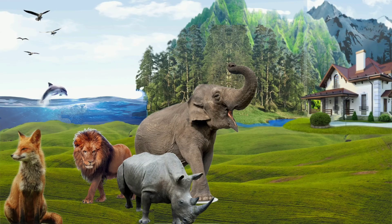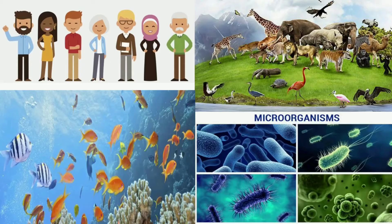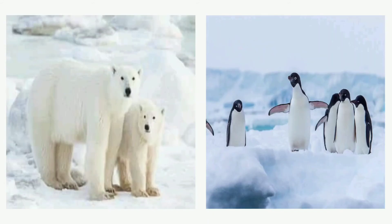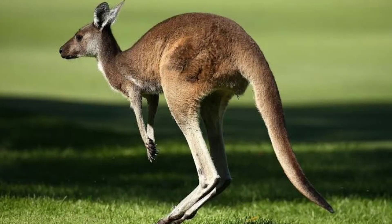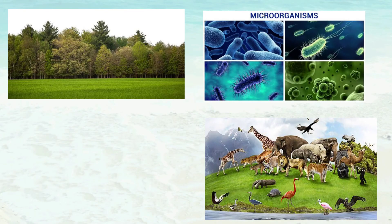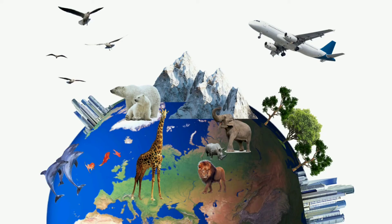Now let's look at the biosphere. There are innumerable, countless kinds of living things on the earth. We see a great variety in the living things in different regions. Penguins are found in cold regions, zebras in Africa, kangaroos in Australia, and elephants and lions in hot climates. Many kinds of plants, animals, microorganisms, and human beings are found everywhere on earth.